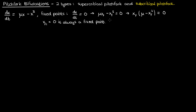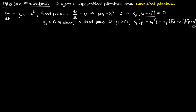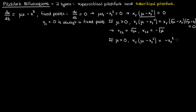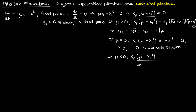Depending on the value of μ we could have some other fixed points as well. If μ is positive then we can factorize the term in the parentheses further, resulting in two more fixed points at +√μ and −√μ. However if μ equals 0 then we just have −xf³ = 0, which only has one solution at xf = 0. And if μ is negative we wouldn't be able to factorize the parenthetical term using real numbers, so 0 is again the only solution.